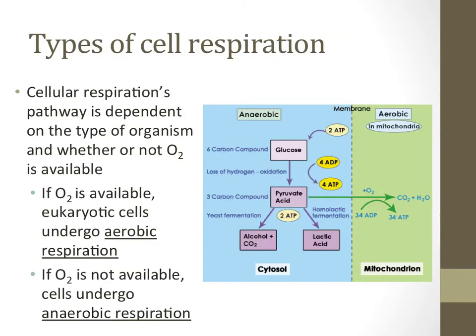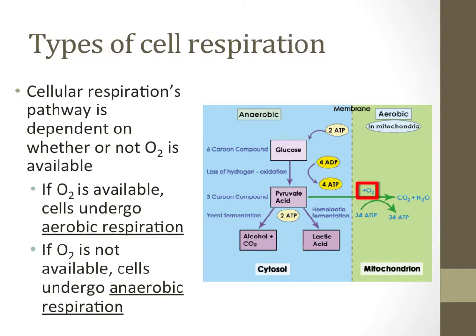While all organisms do some form of cell respiration, there are a number of different ways in which it can occur. Two important factors to determine the type of cell respiration are the type of organism being discussed and whether or not oxygen is available. When oxygen is available, as highlighted in red in the picture here, some organisms can perform aerobic respiration. When oxygen is not available, anaerobic respiration takes place. The rest of this video will describe these two different forms of cell respiration.